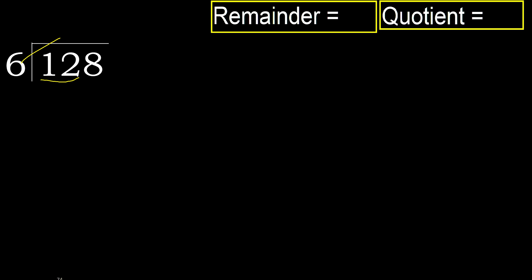6 multiplied by which number is nearest to 12 but not greater? 6 multiplied by 3 is 18 — 18 is greater. 6 multiplied by 2 is 12 — is not greater. Ok. Subtract 12 minus 12 equals 0.